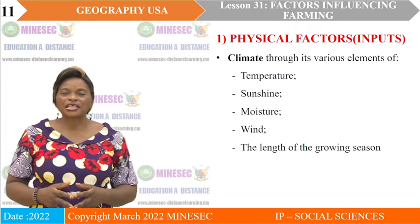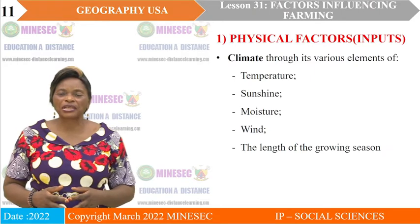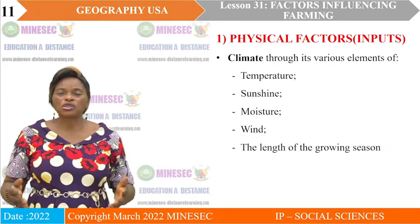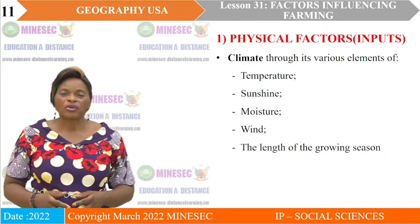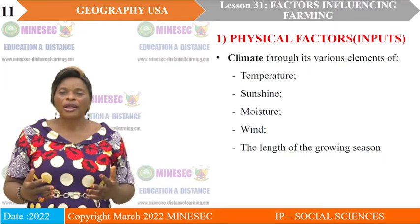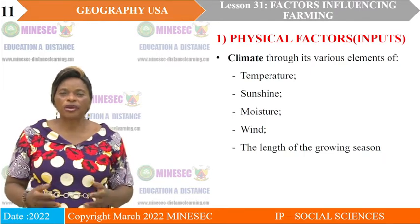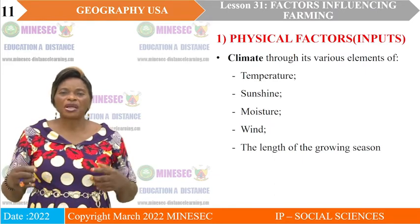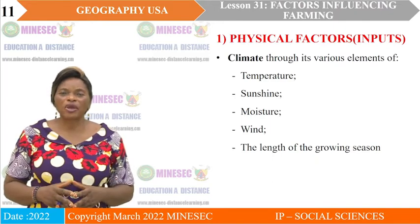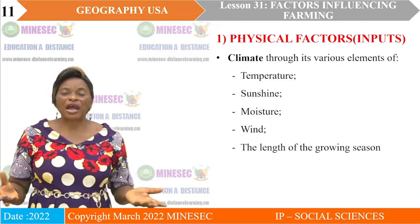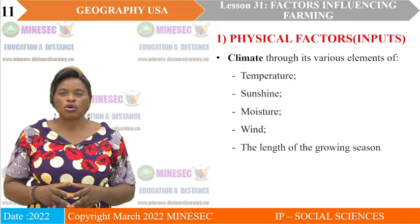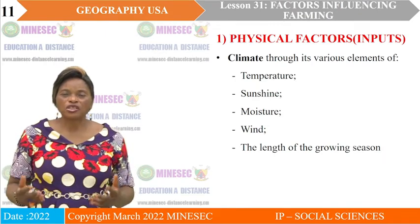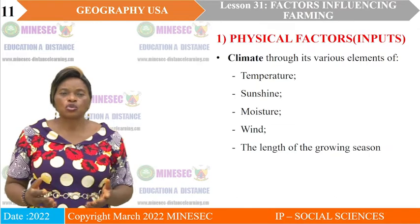The next element is moisture, which is very important. If there is no soil moisture, crops cannot grow because crops cannot grow in dry soil. Soils need moisture, and this moisture comes from rainfall, snow melts, and even dew. Moisture is essential because it enables the plants to grow.